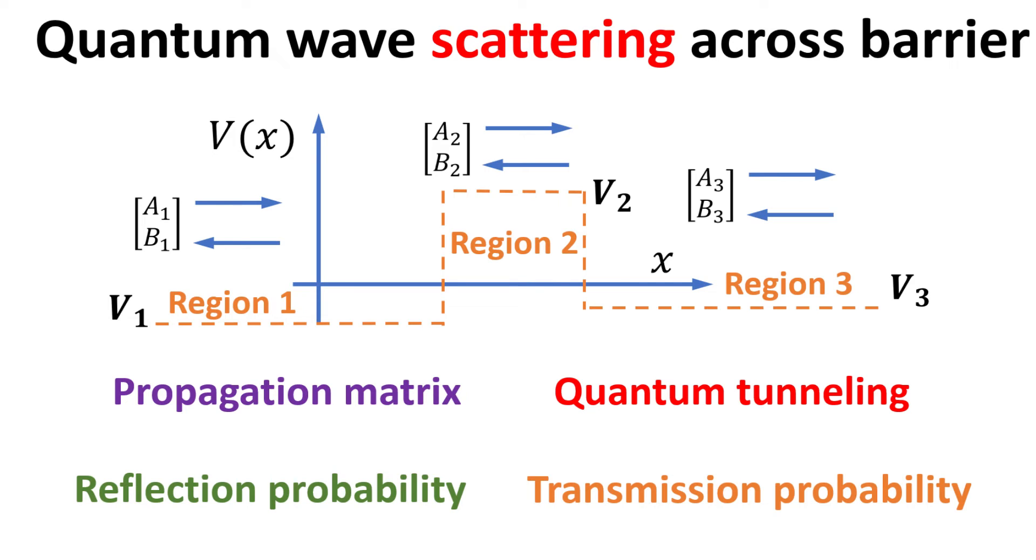In the presence of a potential barrier, these waves can be scattered, such as being reflected or transmitted.